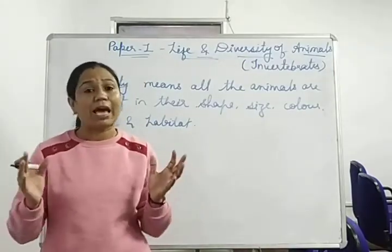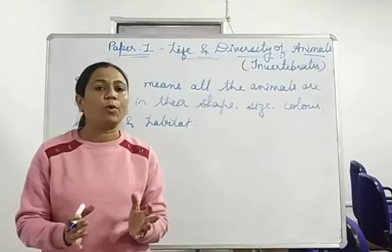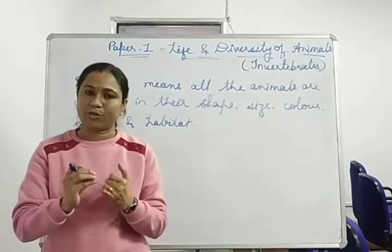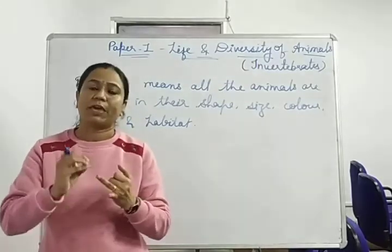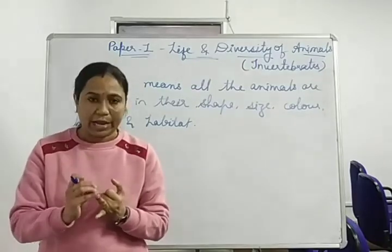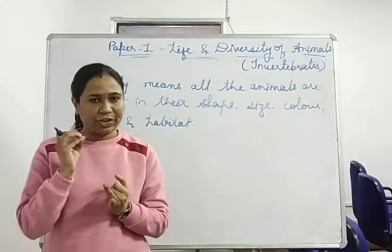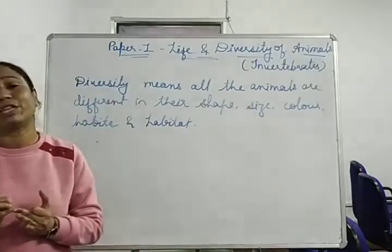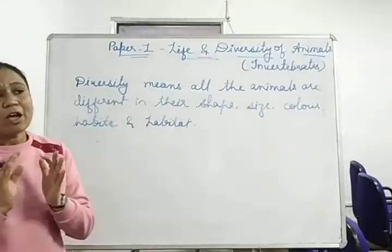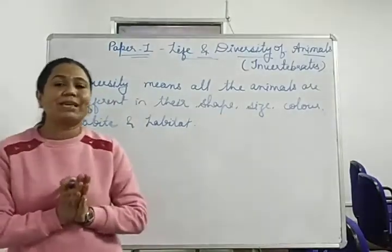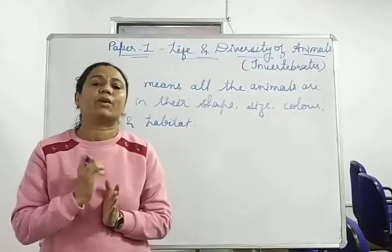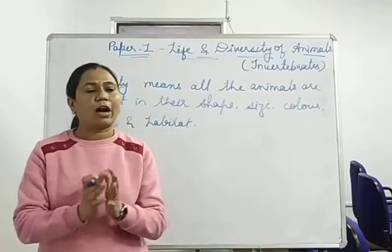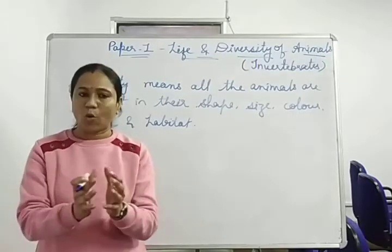At that time, animals had three basic requirements. One: food to eat. Two: shelter for living. Three: a meeting partner. What did animals do for their three basic requirements? When it was seen that they had overcrowded in one area.